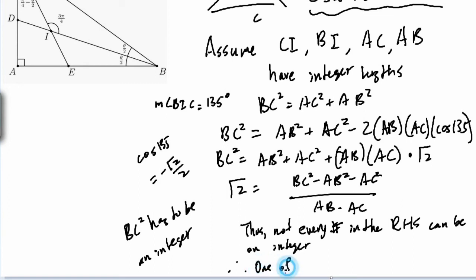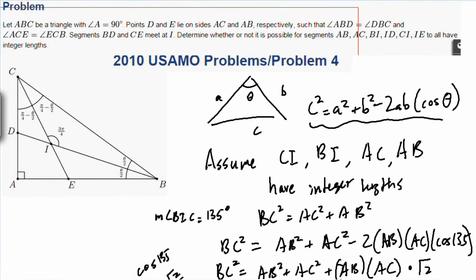Therefore, one of CI, BI, AC, AB must not be an integer. So we just proved it. It's impossible.